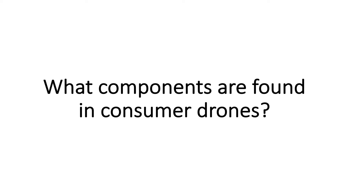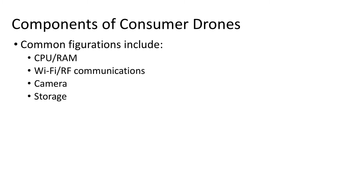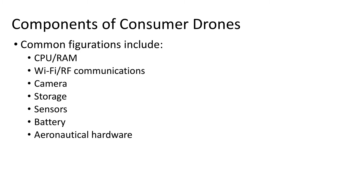So, what components are found in a consumer drone? Common configurations include CPU and RAM, some type of communication system — either through Wi-Fi or some other radio frequency — a camera for photography and video, some sort of data storage for files and an operating system, sensors (the most common of which is GPS), a battery, aeronautical hardware, and a controller for manual flight operations.